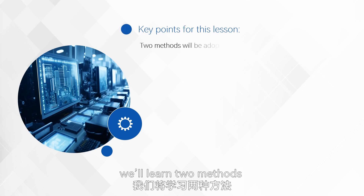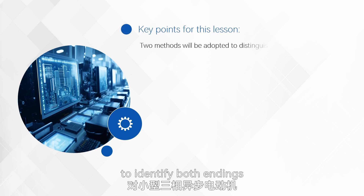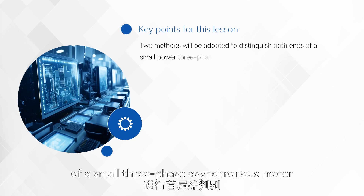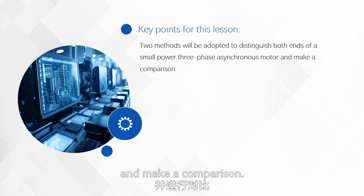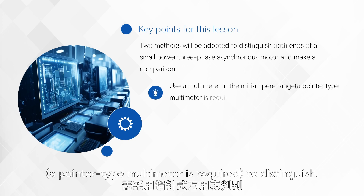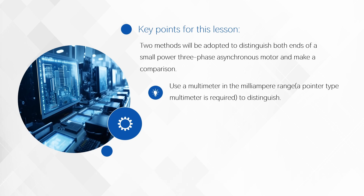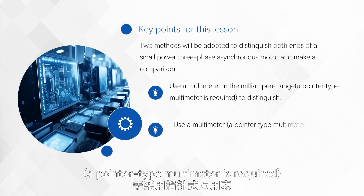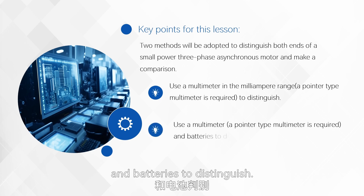In this lesson, we'll learn two methods to identify both endings of a small three-phase asynchronous motor and make a comparison. Method one: use a multimeter in the milliampere range — a pointer-type multimeter is required — to distinguish. Method two: use a multimeter — a pointer-type multimeter is required — and batteries to distinguish.